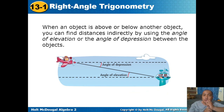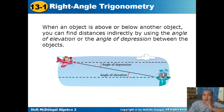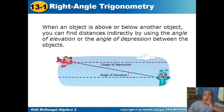Now let's introduce angle of elevation and angle of depression. If an airplane is looking at an object below, the angle formed between the airplane's line of sight and the horizontal is called the angle of depression. If a person on the ground is looking up at the airplane, the angle formed between their line of sight and the horizontal is called the angle of elevation. When looking above: angle of elevation. When looking below: angle of depression.